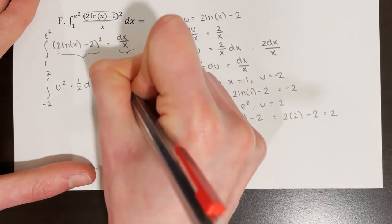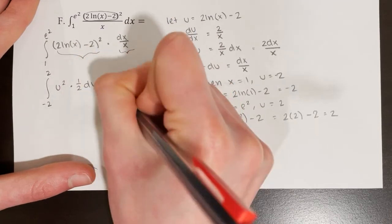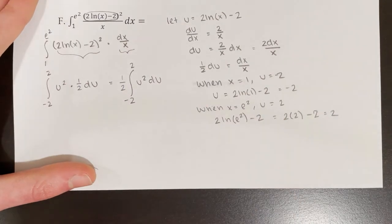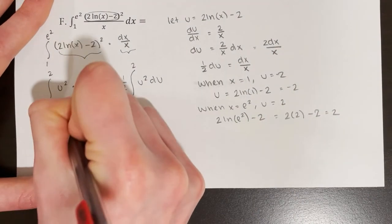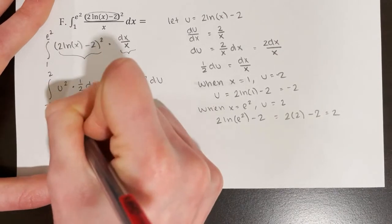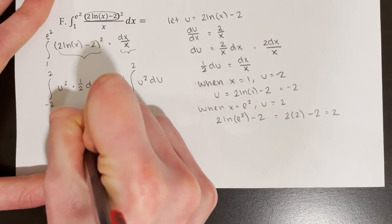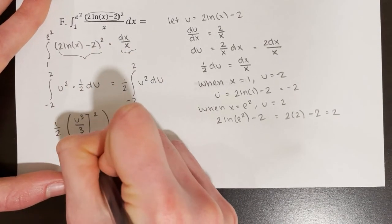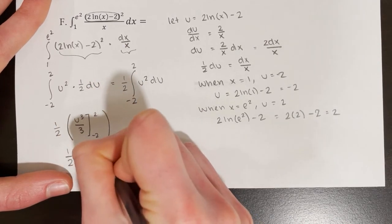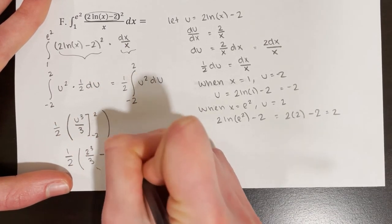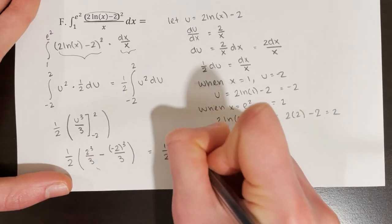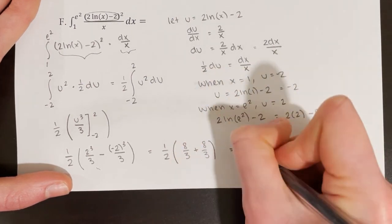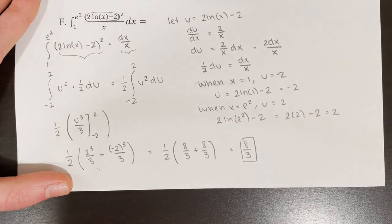Pulling out 1/2, we have 1/2 times the integral from negative 2 to 2 of u squared du. Evaluating with the fundamental theorem: 1/2 times the antiderivative u cubed over 3, evaluated at negative 2 and 2. First we plug in 2: 2 cubed over 3. Then minus negative 2 cubed over 3. That gives 1/2 times 8/3 plus 8/3, which is 1/2 times 16/3, equaling 8/3. So 8/3 is our answer.